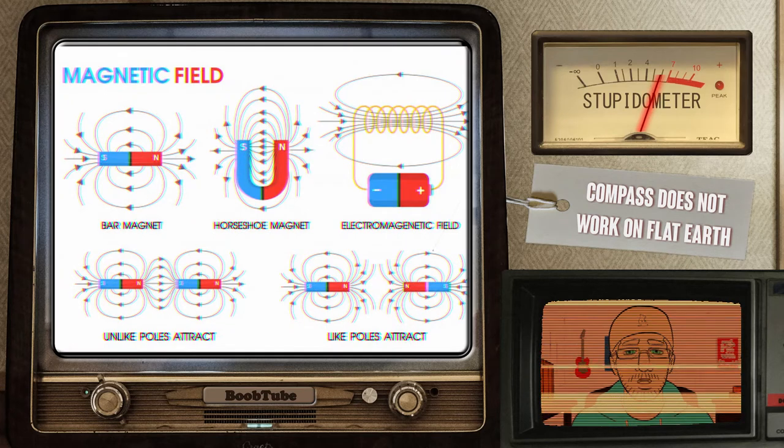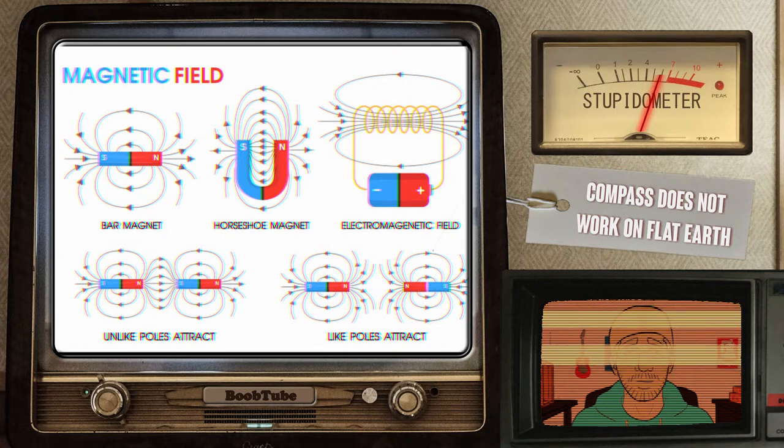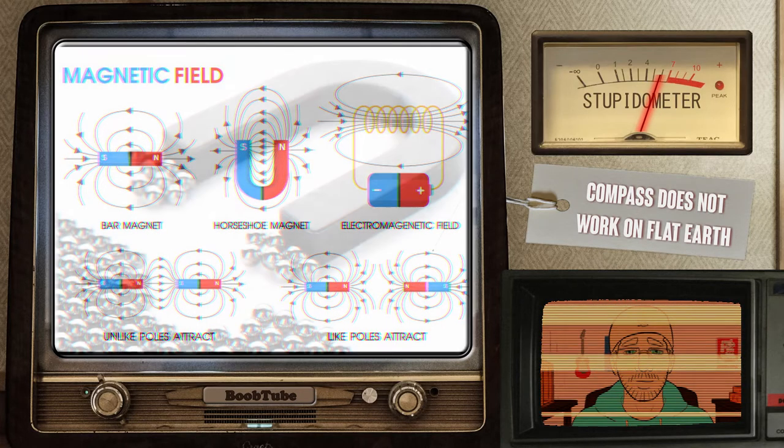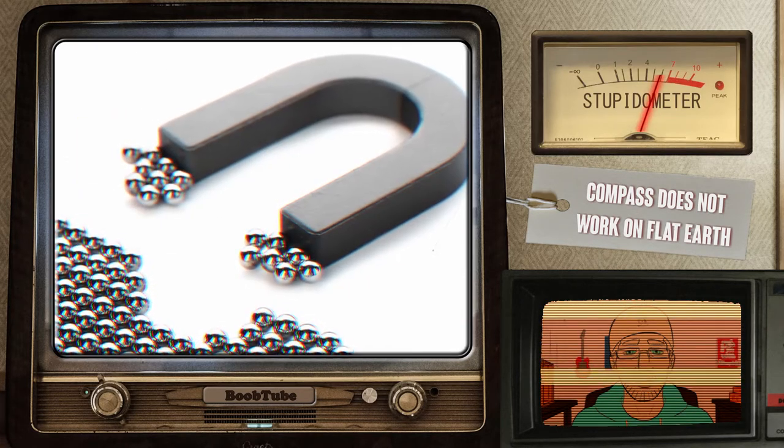Then, we'll talk about what causes the magnetic poles and the nuances. Finally, understanding why compass fits the globe model and falls flat on a flat world. See what I did there? Actually, let's start from magnet.